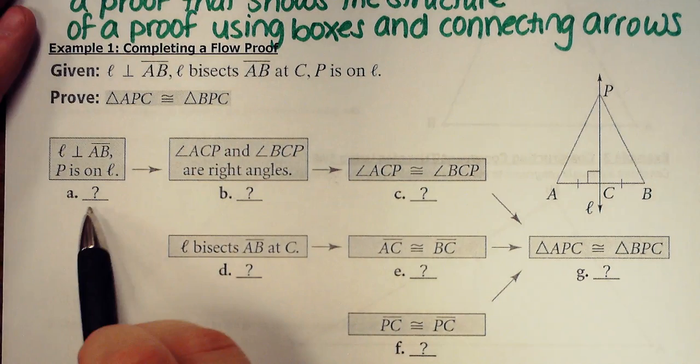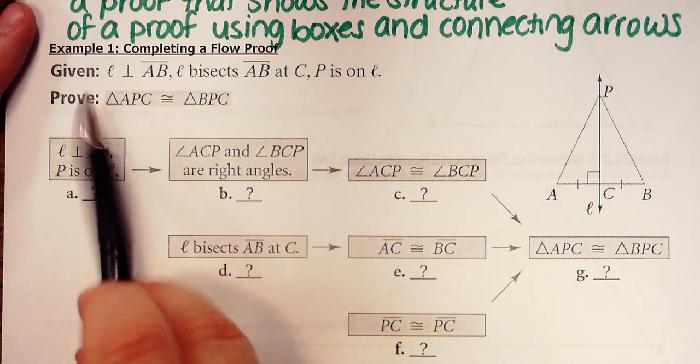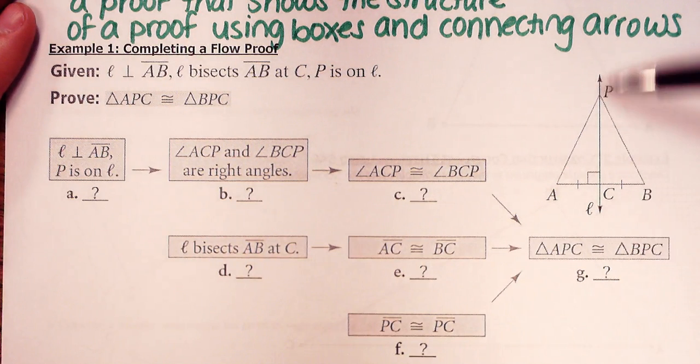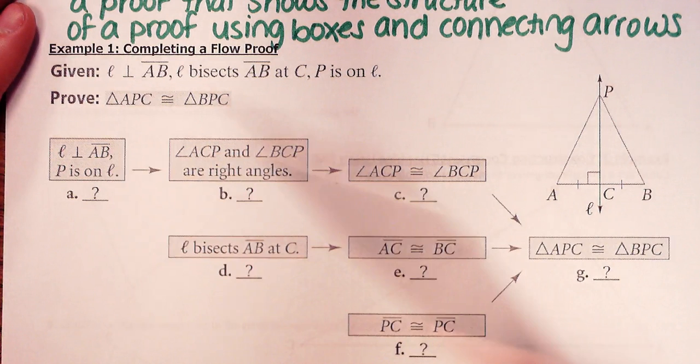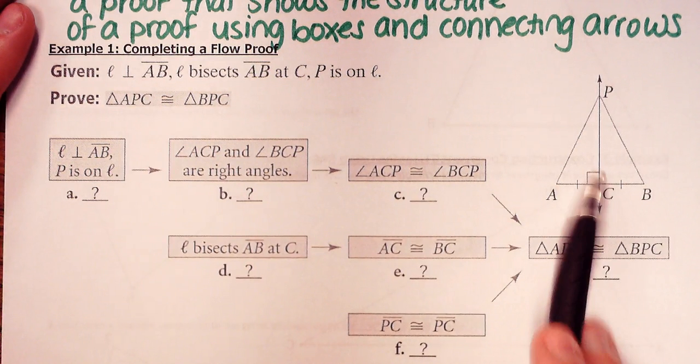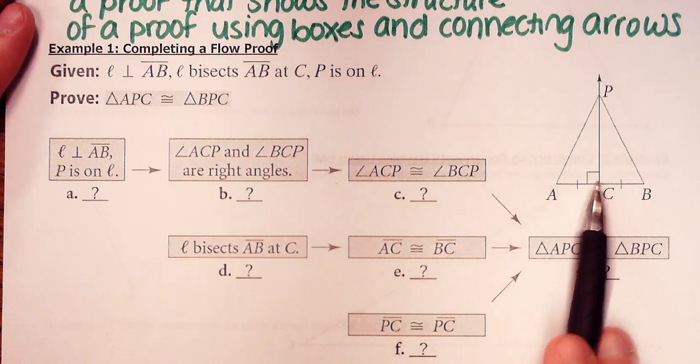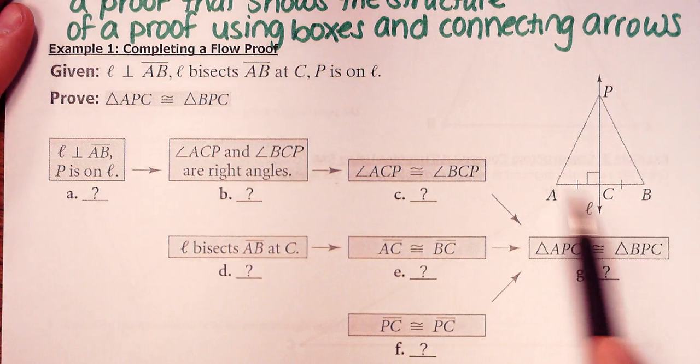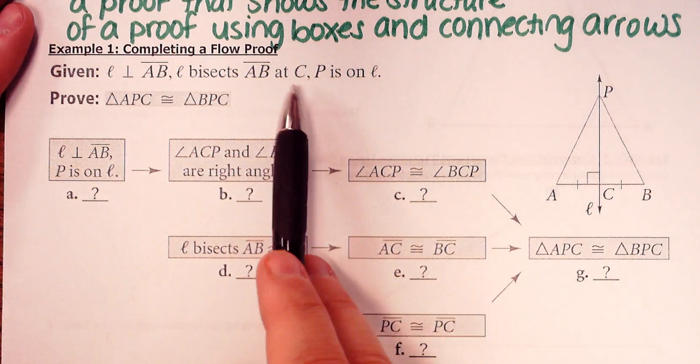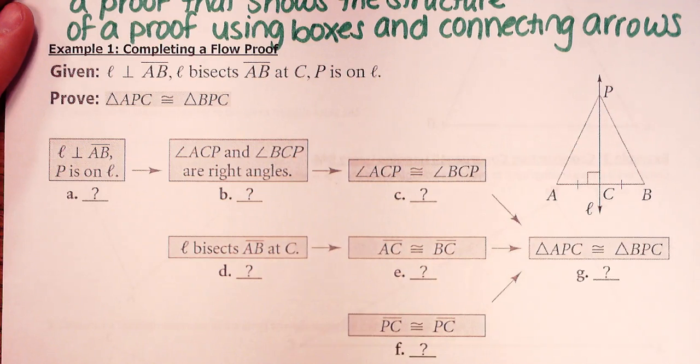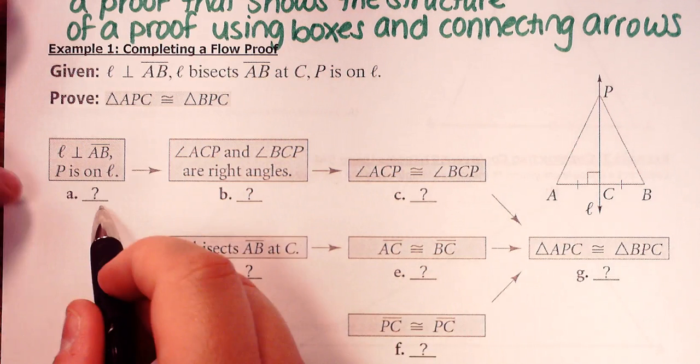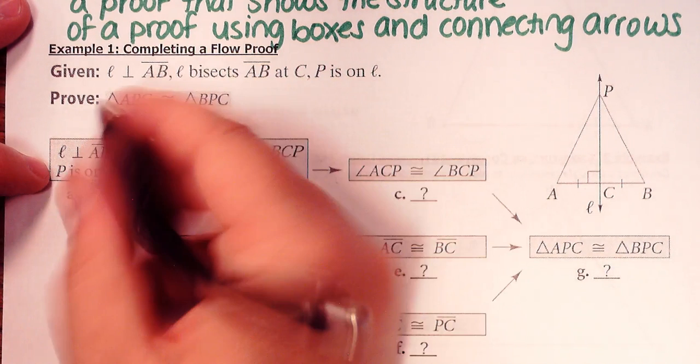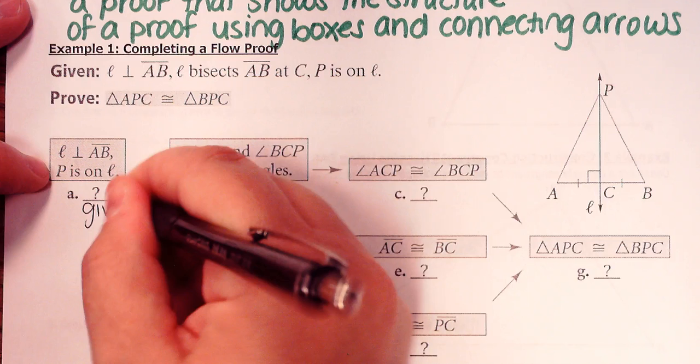So usually, at the beginning here, you'll notice we have this diagram, and we have L, which is the line here. Actually, PC would be another way to label that. It's perpendicular to AB, so you can see in the diagram they've put the right angle there. They also say that L bisects AB, which would be the segment going across the bottom of this triangle here at point C, and P is on the line. Alright, so in the flow proof, this is literally just stating all the given information. So for A, we're just going to fill in given.